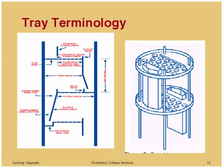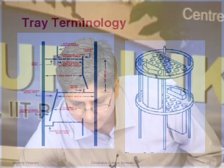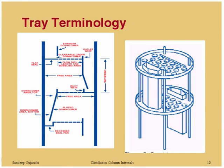The straight downcomer versus the sloped downcomer — sloped downcomer trays are typically used where the liquid handling capacity requirement is lower and vapor handling capacity requirement is higher. By sloping the downcomer, the active area increases because the downcomer width is reduced at the bottom, giving more active bubbling area and hence more vapor handling capacity.